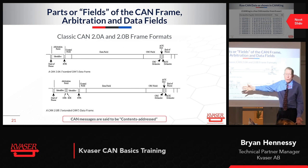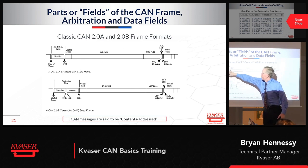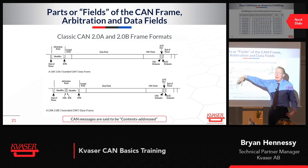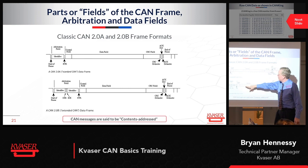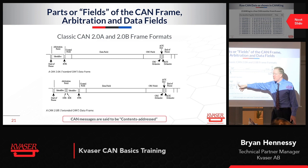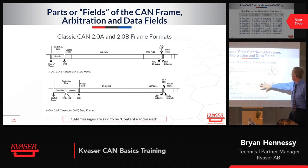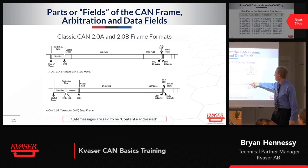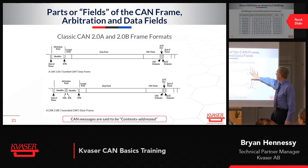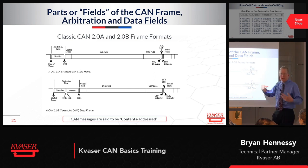I'll talk about the arbitration field and how it may be broken down by J1939 as an example — it's different in CANopen. I'll talk about the data field, a little bit about the control field, which basically contains the DLC, the data length code. I'll mention the CRC without going into great detail on how it works, just what it does. Then there's an acknowledgement, which is pretty easy to understand, and then an end of frame sequence. And then you're done with your CAN frame.